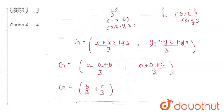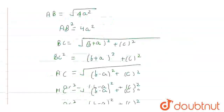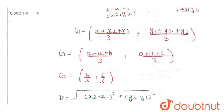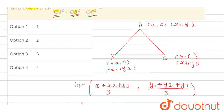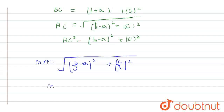In the given question, we also need to find the distance of each vertex from centroid G. We will find GA using the same distance formula. G is (b/3, c/3) and A is (a, 0), so GA = √((b/3 − a)² + (c/3)²). Therefore GA² = (b/3 − a)² + c²/9.